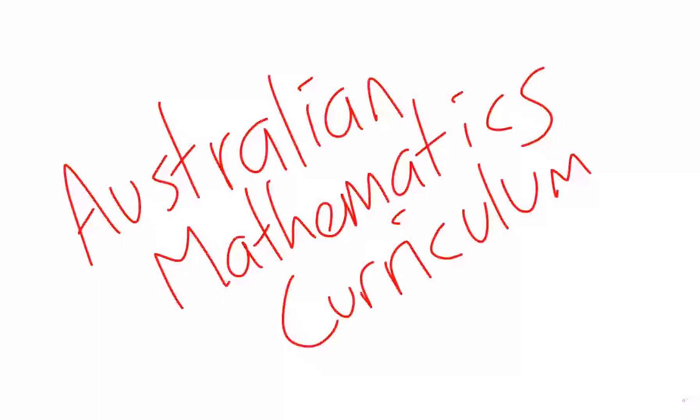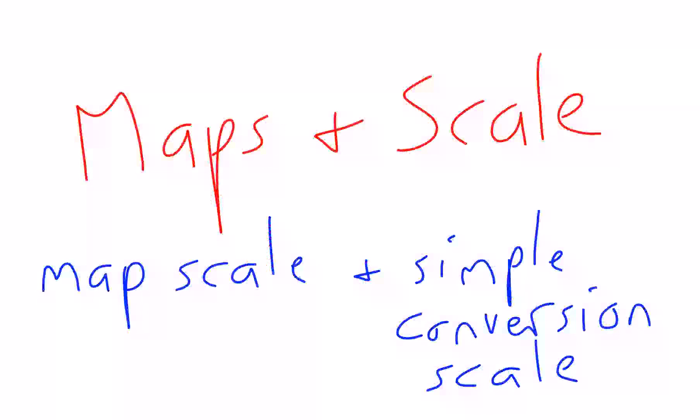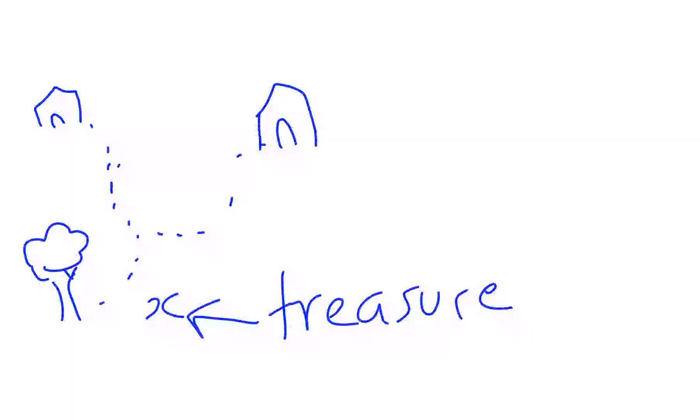Australian Mathematics Curriculum, Map Scale and Simple Conversion Scale. On a map, we have a scale so we can find out what the real distance is by looking at the map. The scale might be written in a simple conversion scale where one centimeter, we're told, represents a hundred meters in real life.